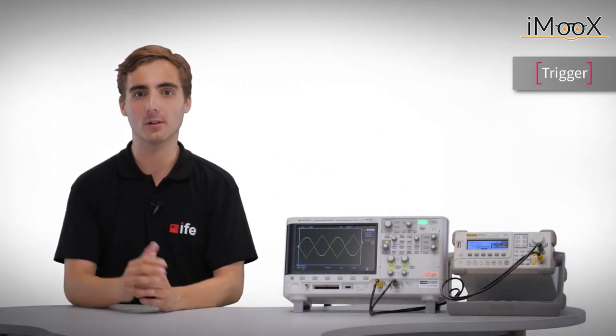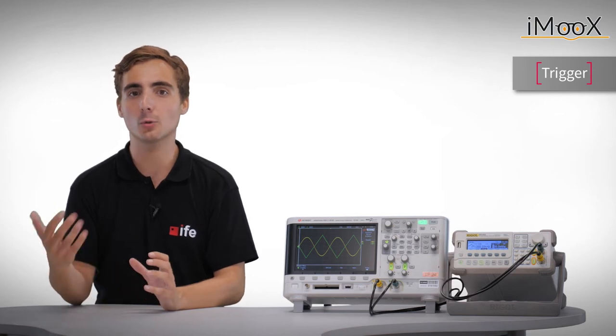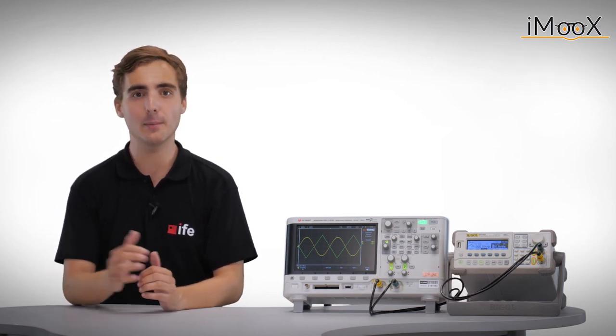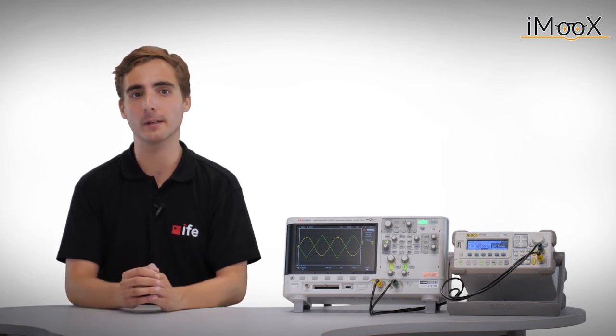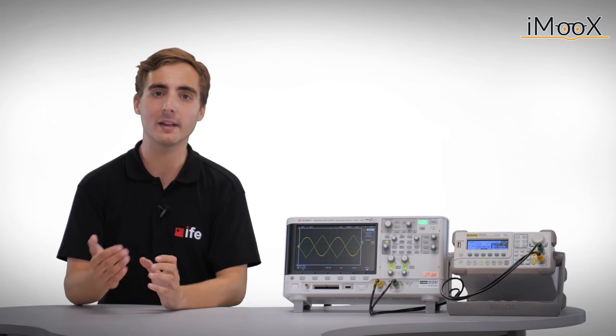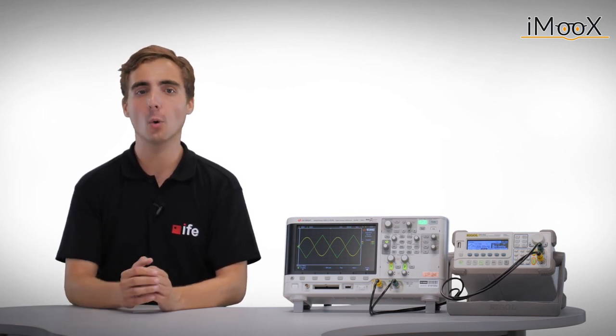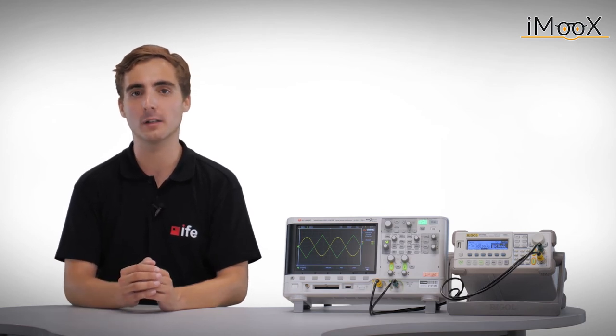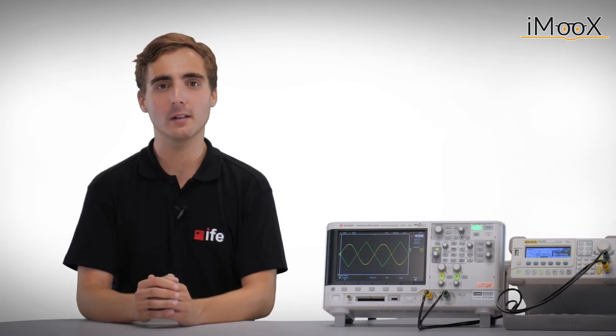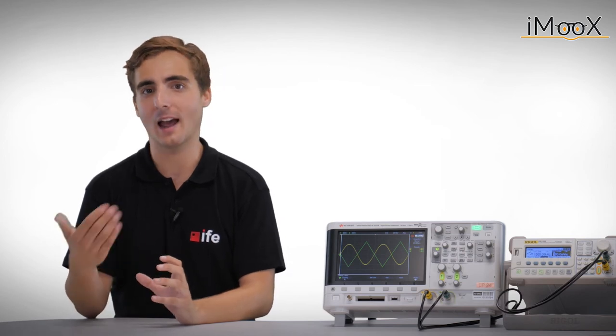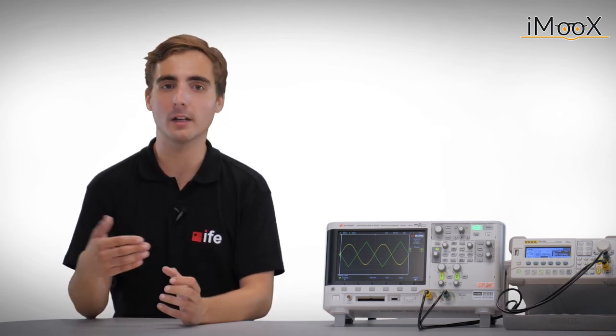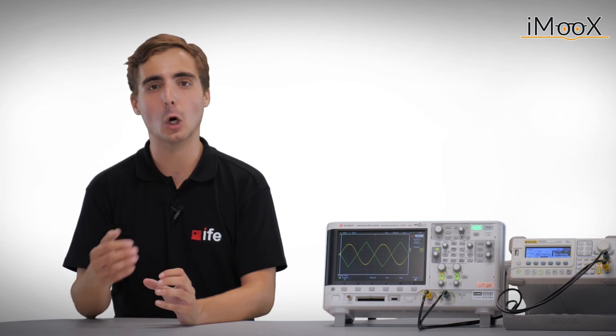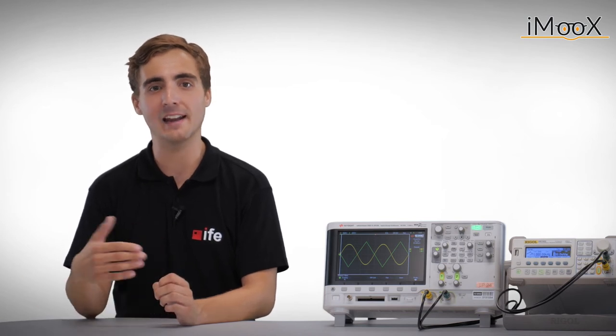Now, we come to a very important topic, which is the so-called trigger of the scope. In the previous examples, we always had a stationary image on the screen. But we have to ask ourselves, why is this the case? How does the scope know when to start a new recording? This can be done by setting appropriate triggers. The recording is triggered when a defined event occurs. In general, there are many different types of events that can be fired depending on the channel signal. In this tutorial, we will focus on the simplest and most commonly used one, it's the edge type trigger event.